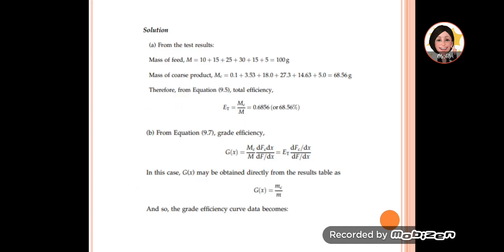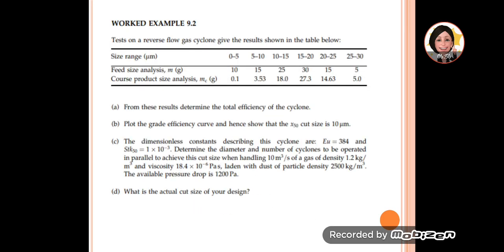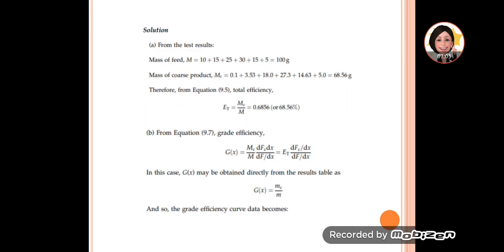First, from the results, the total mass was 100 and the coarse product was 65. The total is simply adding up the mass and the coarse product. The total efficiency is affected by the mass of the coarse products. We get the total efficiency as 68.56%. Then we calculate the grade efficiency.